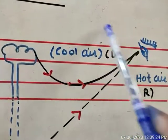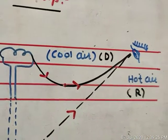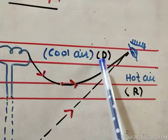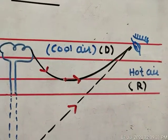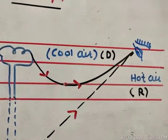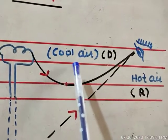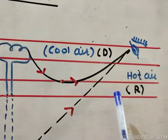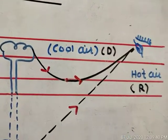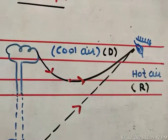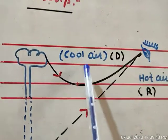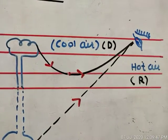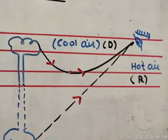The air is cool higher up. Because the air is cool, it behaves as a denser medium. The cool air has a higher refractive index compared to the hot air. This is why the upper surface acts as the denser medium and the lower surface near the ground acts as the rarer medium.